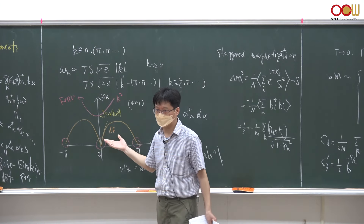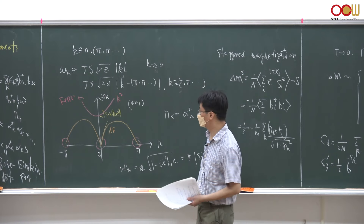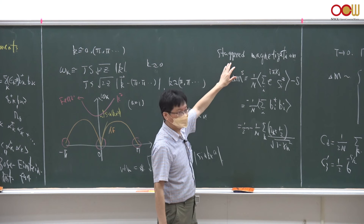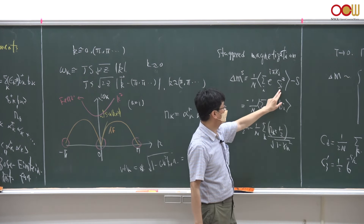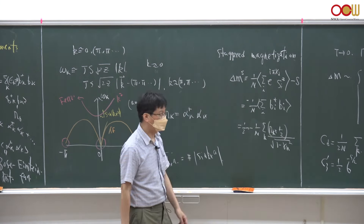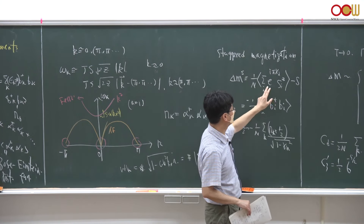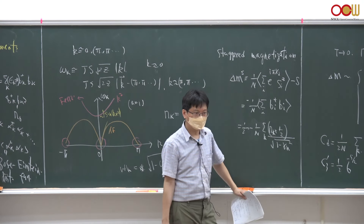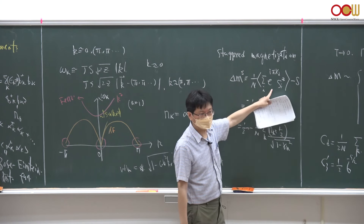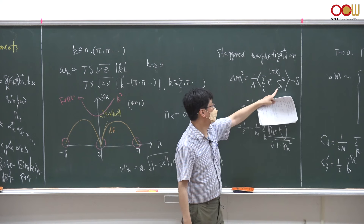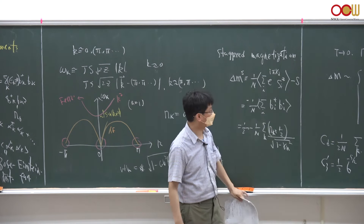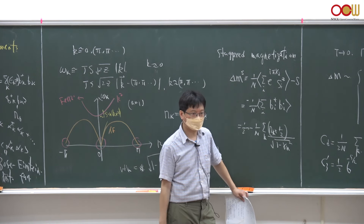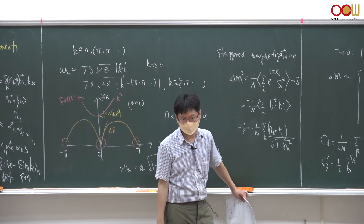Once we have the antiferromagnetic spin-wave dispersion, we can calculate all observables such as magnetization as a function of temperature. The appropriate order parameter is the staggered magnetization, defined as sum of S_{iz} * e^{i*pi*x_i}, which alternates sign every two sites giving +, -, +, -, +, -. This flips the sign of spin orientations on sublattice B so the contributions don't cancel, yielding a finite net staggered magnetization.